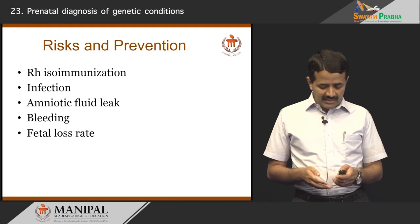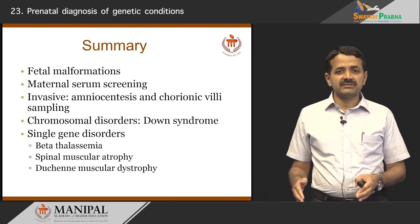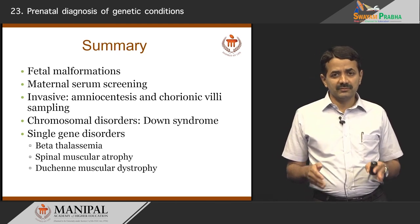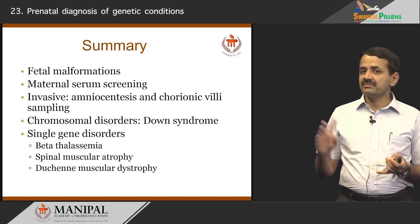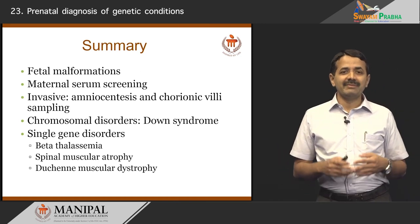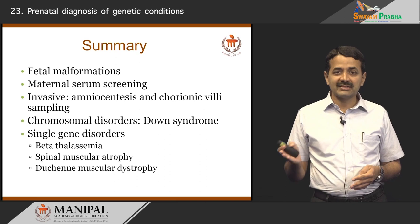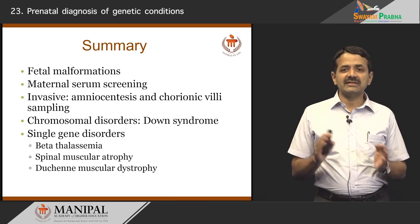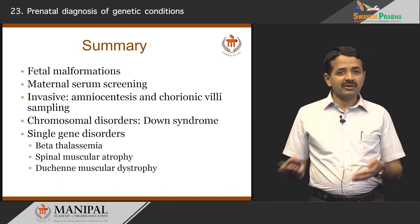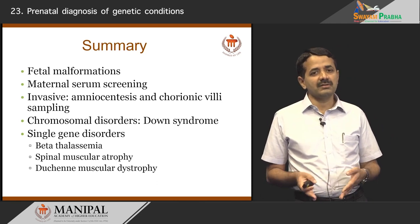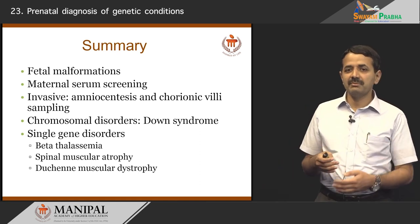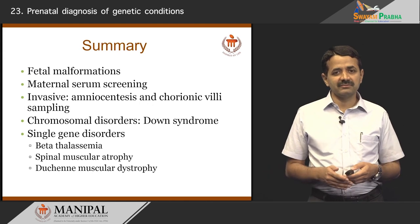To summarize what we have discussed today: we covered prenatal diagnosis of genetic disorders. Most commonly, these involve fetal malformations detected by ultrasound, non-invasive maternal serum screening for almost all women, or non-invasive prenatal screening using fetal DNA. Amniocentesis and chorionic villus sampling are the most commonly used methods for invasive testing. The most common conditions tested are Down syndrome and single gene disorders like beta-thalassemia, spinal muscular atrophy, and Duchenne muscular dystrophy, though this varies from place to place and center to center.